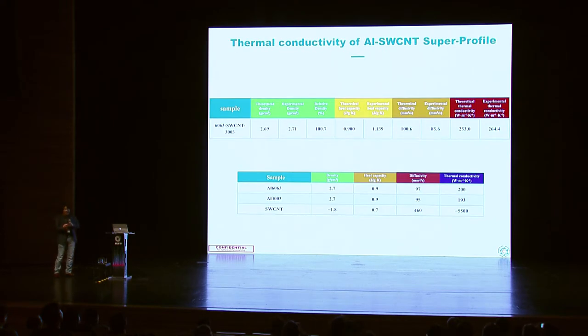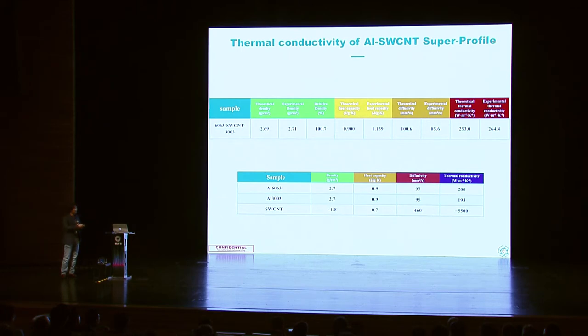Let me also summarize another property: thermal conductivity. Aluminum generally shows around 200 W/m·K. Single-wall carbon nanotube, depending on quality and structure, can reach up to 5,500 W/m·K — a really high number. Combining those together, when I calculated at 1 volume percent addition, theoretically it should show 253, but our experimental conductivity shows higher than the theoretical value. So by adding single-wall carbon nanotube, I can control the thermal conductivity.